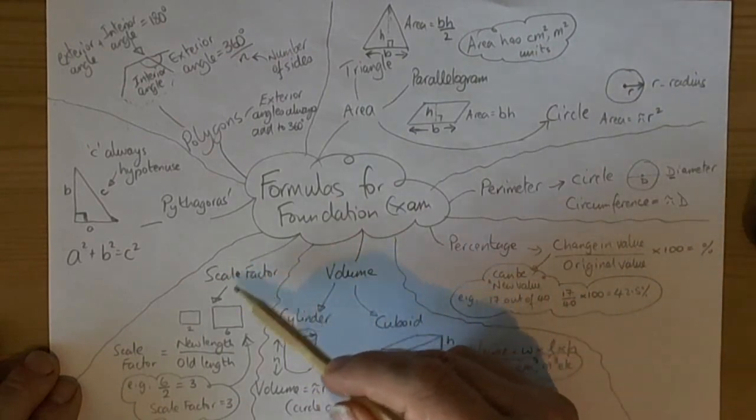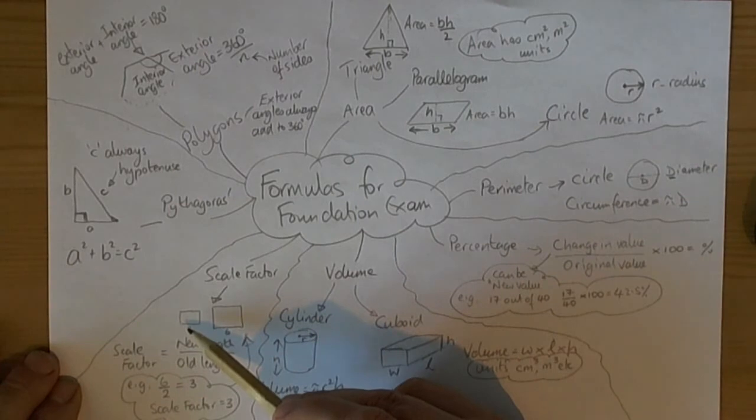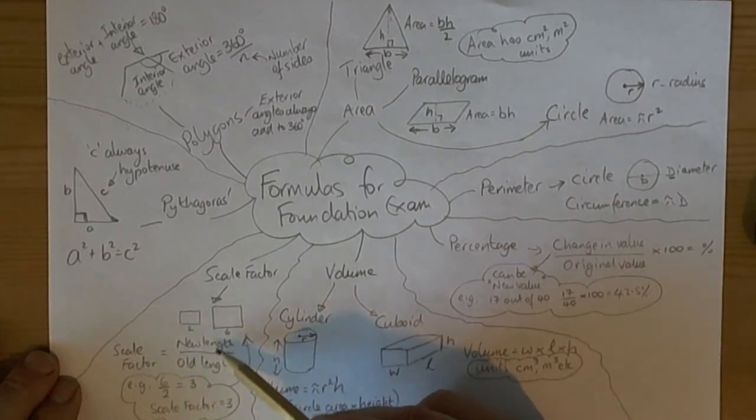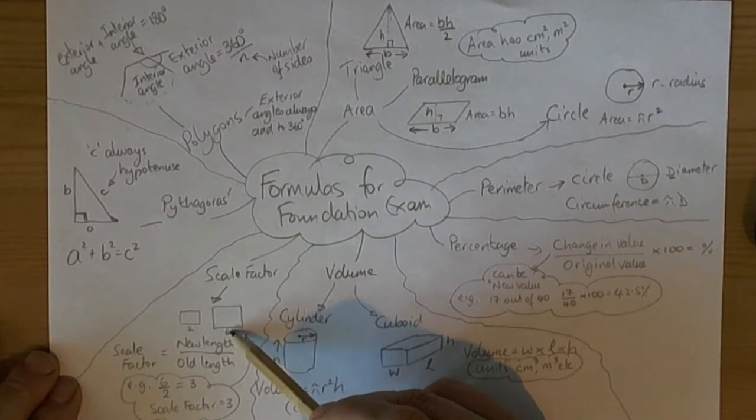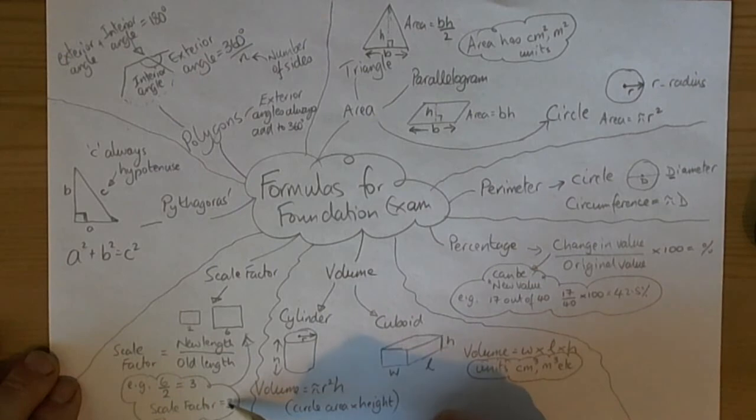For scale factors, we need to remember that a shape can be enlarged or reduced from a small shape to a big shape. The scale factor is simply the new length divided by the old length. In this particular example, we've got a new length of 6 and an old length of 2. Divide those, we get a scale factor of 3. Remember, for scale factors we don't put a multiply sign.